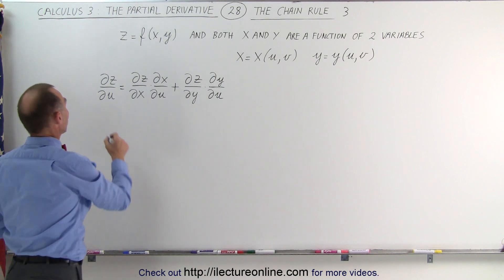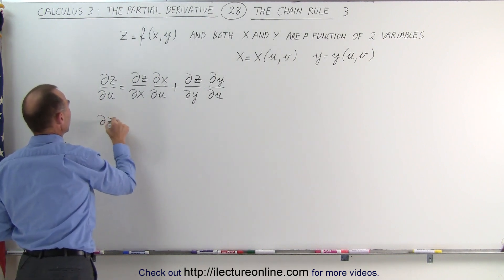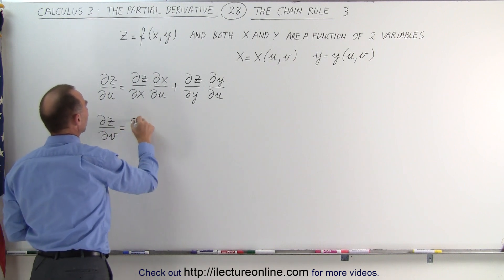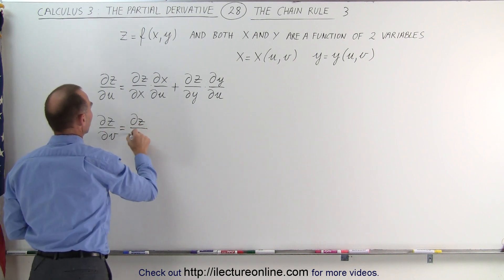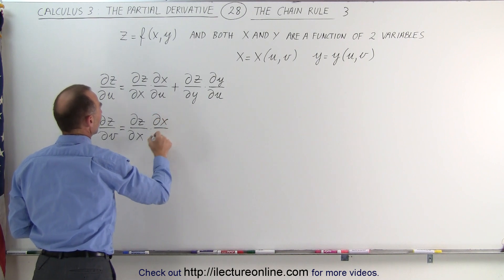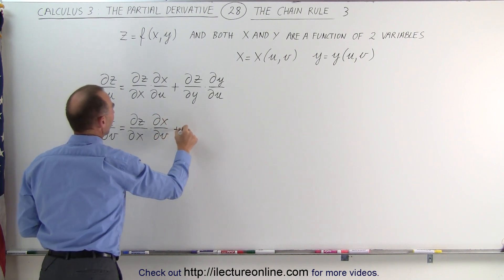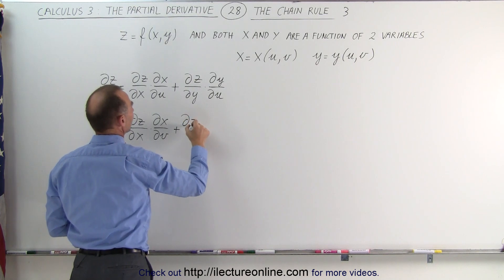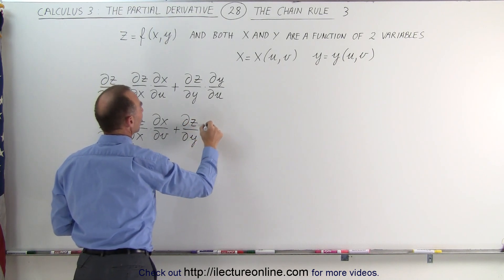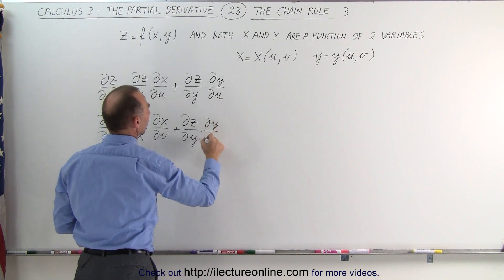We also want to find the partial derivative of z with respect to the second variable v, which is equal to the partial of z with respect to x times the partial of x with respect to v, plus the partial derivative of z with respect to y times the partial derivative of y with respect to v.